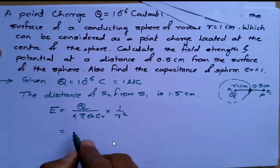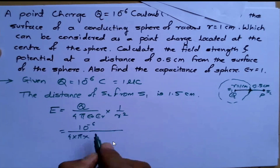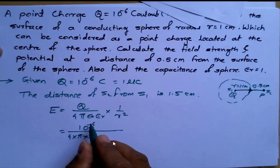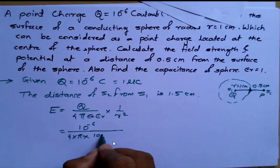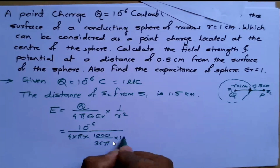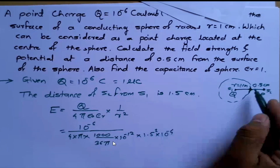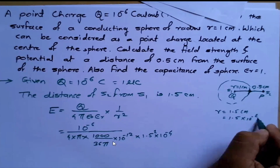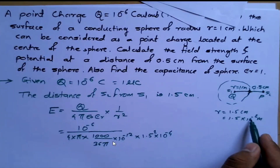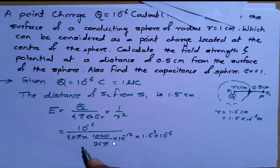Substituting values: Q = 10⁻⁶, and ε₀ = 1000/(36π) × 10⁻¹². The distance r = 1.5 cm = 1.5 × 10⁻² m, so r² = 1.5² × 10⁻⁴. Solving this expression gives the electric field strength.